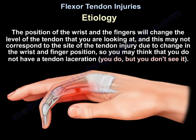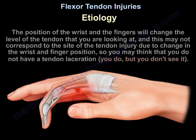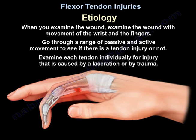The position of the wrist and fingers will change the level of the tendon you are looking at, and this may not correspond to the site of the tendon injury. So you may think you don't have a tendon laceration, but you do. When you examine the wound, examine it with movement of the wrist and fingers. Go through a range of passive and active movement, and examine each tendon individually.